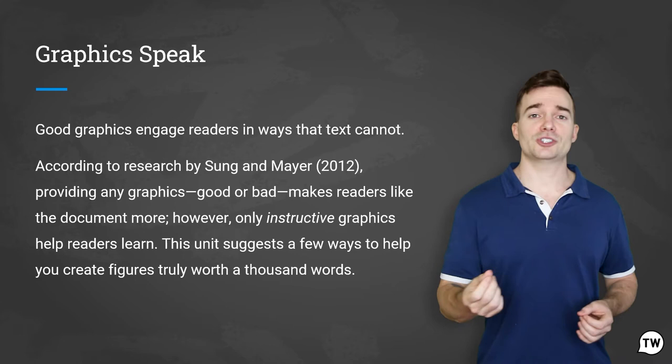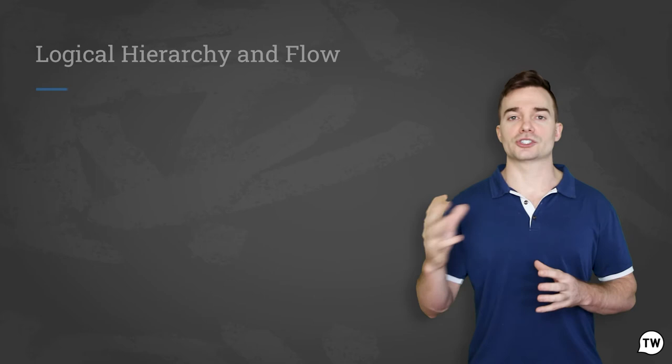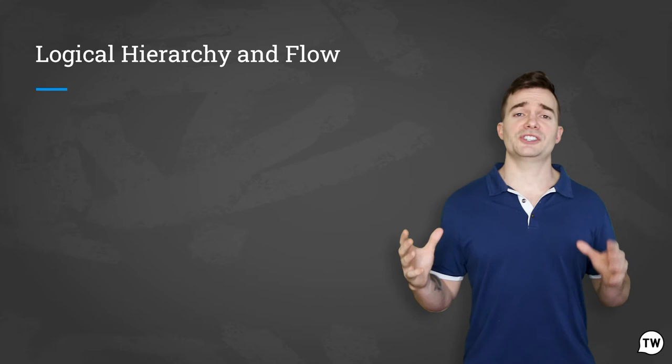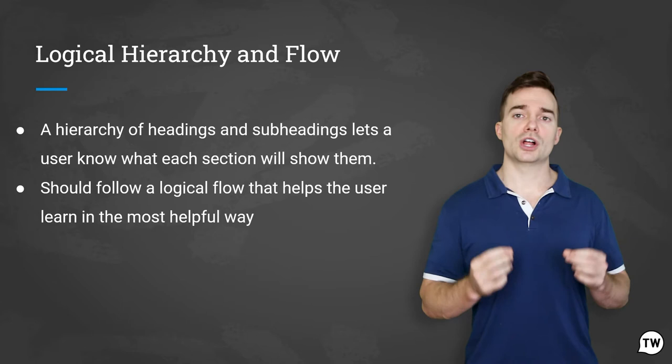The next essential element in user documentation is to focus on the problem to be solved — make sure to show users how to perform tasks with your product. This is followed by logical hierarchy and flow, the element that gives structure to your document. Good documentation needs a hierarchy of headings and subheadings that lets a user know what each section will show them.